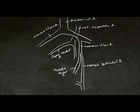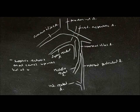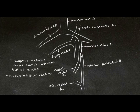Coming off the internal pudendal artery, we have the inferior rectal artery, and the inferior rectal artery supplies underneath the level of the valves.